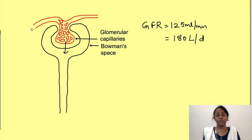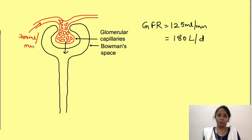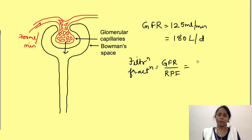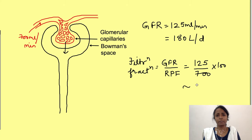Normally, approximately 700 ml of plasma flows into the renal vessels. To calculate how much of this plasma is getting filtered as a fraction, we divide the glomerular filtration rate by the renal plasma flow: 125 ml per minute divided by 700 ml per minute equals approximately 20 percent. So 20 percent of plasma entering the renal vessels gets filtered.